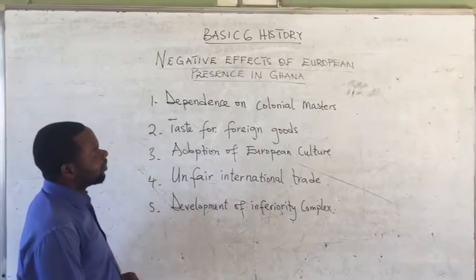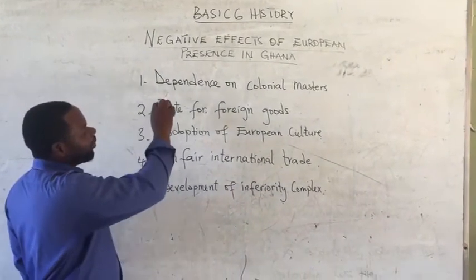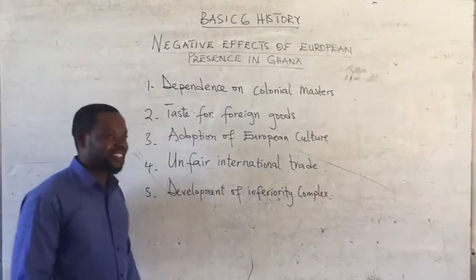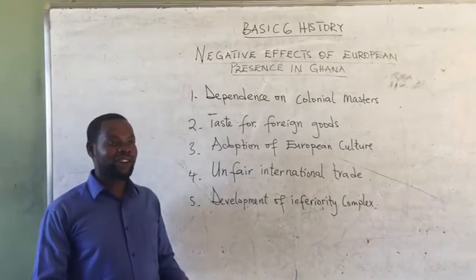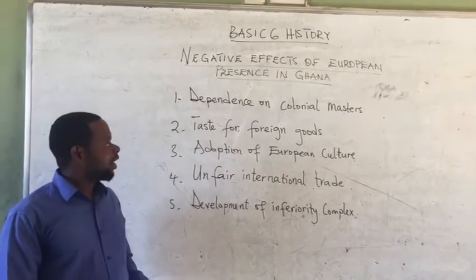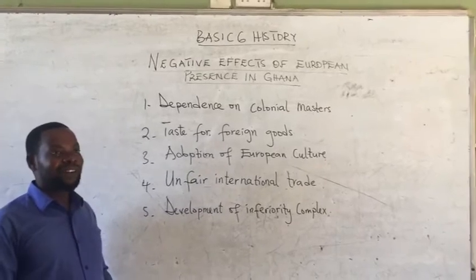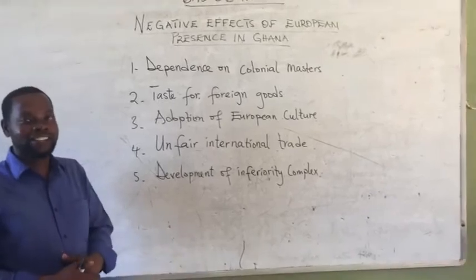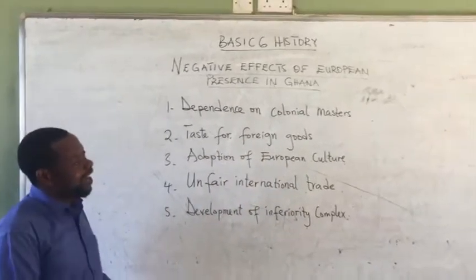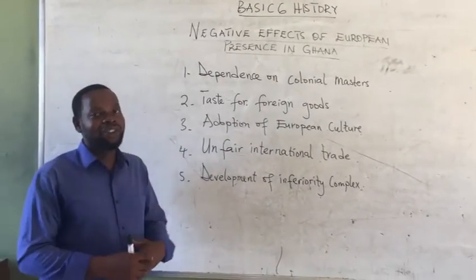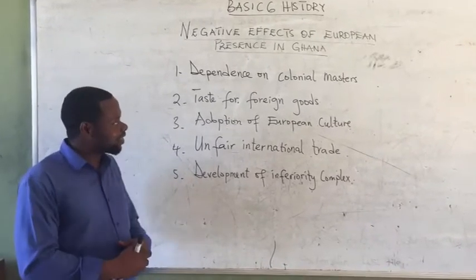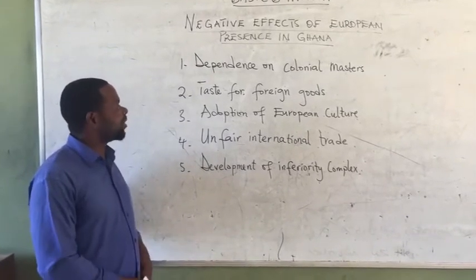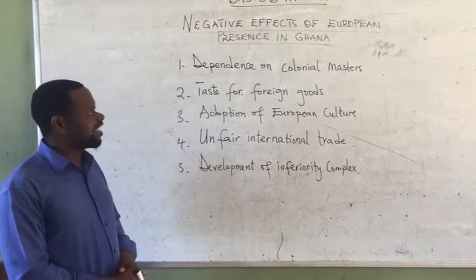One of them, as we said, we call it dependence on colonial masters. Till date, all across Africa, not Ghana only, our African continent — we Africans still depend on our colonial masters, those that colonized our country. We still depend on them for advice in all fields, and that is also haunting us seriously today. There is also a negative effect affecting us in decision making.